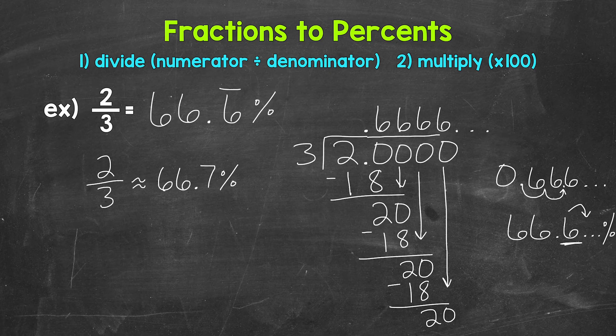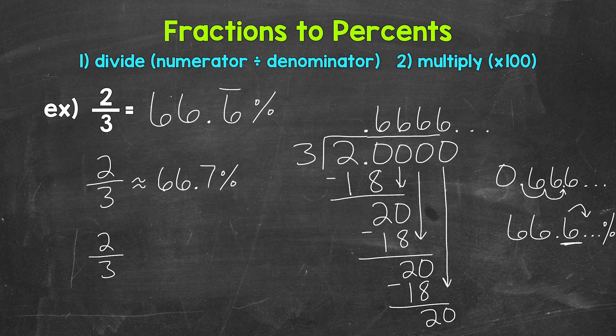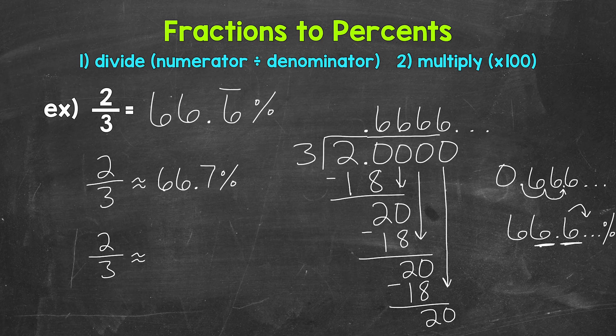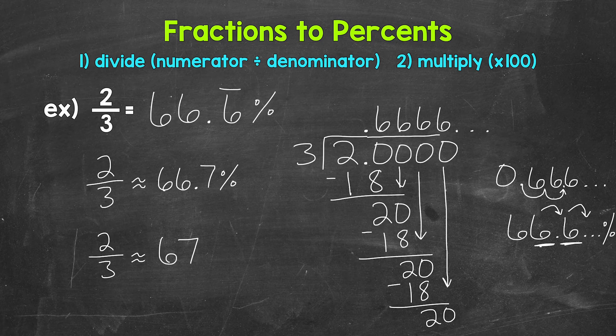Now let's round to the nearest whole percent. We need to round to the ones place. Two thirds is approximately, we have a six in the ones with a six to the right in the tenths. So this rounds up to 67 percent.